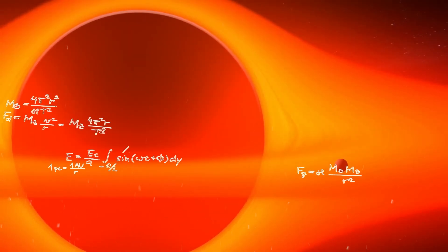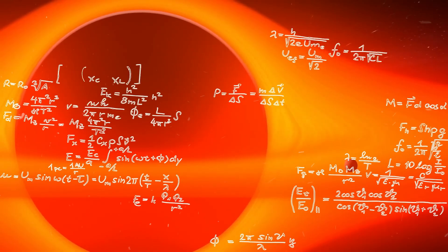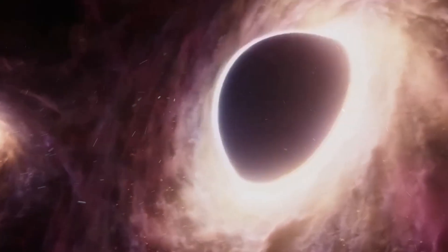When we delve into the equations describing black holes, we encounter something truly remarkable. The Schwarzschild radius, r, marks the distance from the center of a black hole to its event horizon, the point of no return.